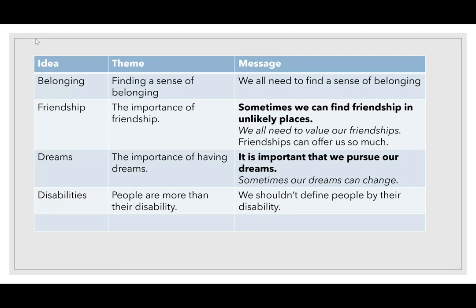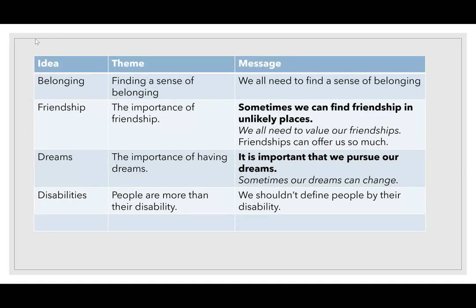To remind you, these are the ideas, the themes, and the messages. The themes are what we're going to stick with. Ideas are a little bit simple, messages might be a little bit tricky, so themes are somewhere in the middle. The themes we're looking at are: finding a sense of belonging, the importance of friendship, the importance of having dreams, and people are more than their disability. You also might have a fifth one — hopefully you do, so you can come up with your own. But if not, those are four themes in the text.